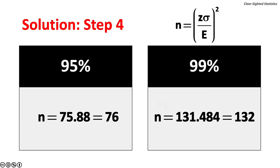For a 95% confidence level, we would need a sample size of 76 passengers. For a 99% confidence level, the sample size is 132 passengers. Please note, we cannot have a fractional sample size.